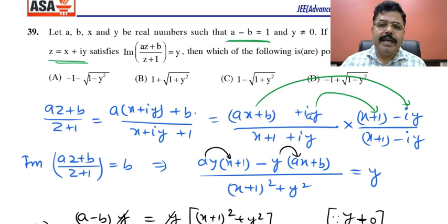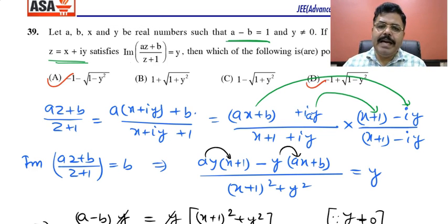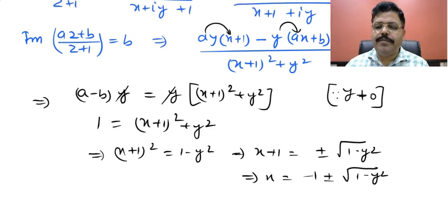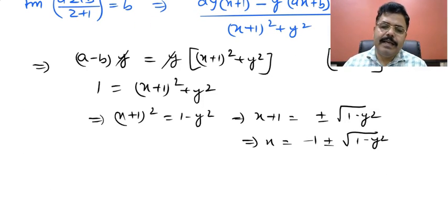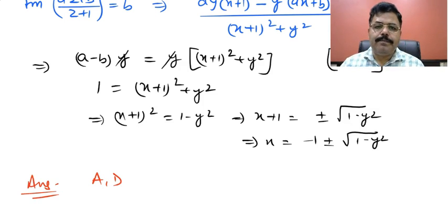Option A will be correct based on X = −1 + √(1 − Y²) and option D will be correct for X = −1 − √(1 − Y²). So the correct answers are A and D.